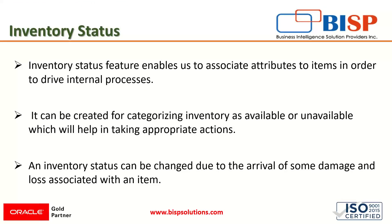Each inventory item has a status that is associated with it. The inventory status feature enables us to associate attributes to the item in order to drive the internal process. For example, in any business, if some inspection process is going on — pending for quality management — some inspections are required. In that case, we can change the status of that inventory from available to unavailable. It can be created for on-hand inventory and inbound and outbound transactions, so it can be used for categorizing inventory as available and unavailable.